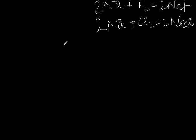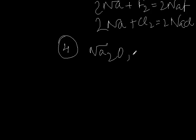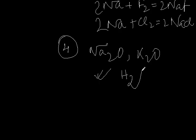The fourth point is that alkali metals form stable oxides like Na2O and K2O, and similarly hydrogen also forms its oxide H2O. The role of hydrogen here is like that of the alkali metals.